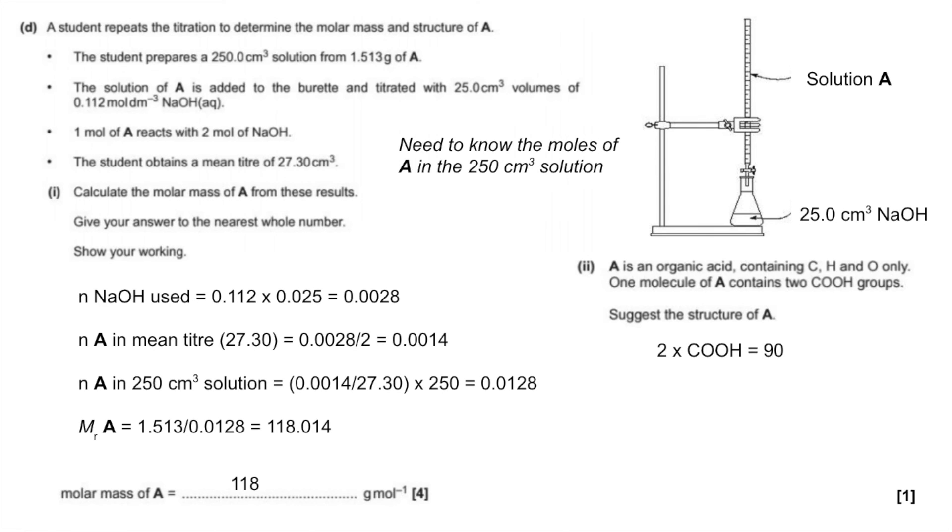I'm now going to subtract that from the 118, the whole molecule. That leaves 28, which is equivalent to two carbons and four hydrogens. So a possible structure for this acid looks like that, or you could have had that.